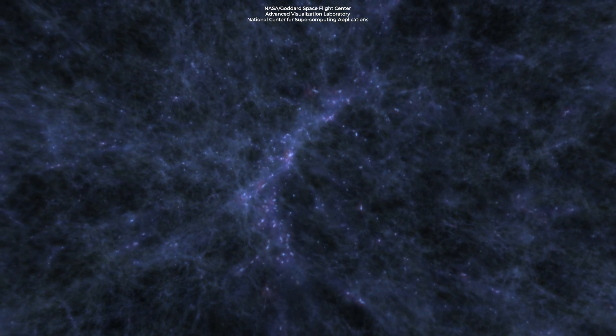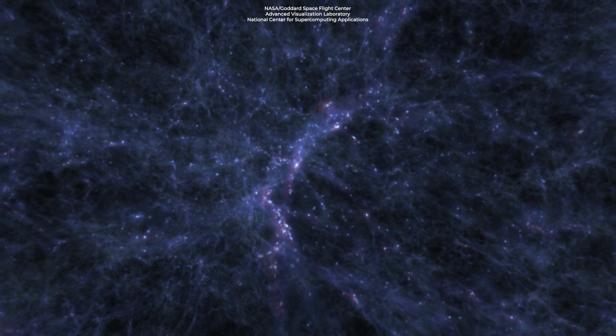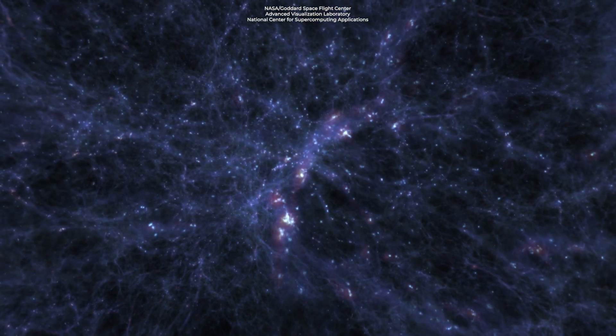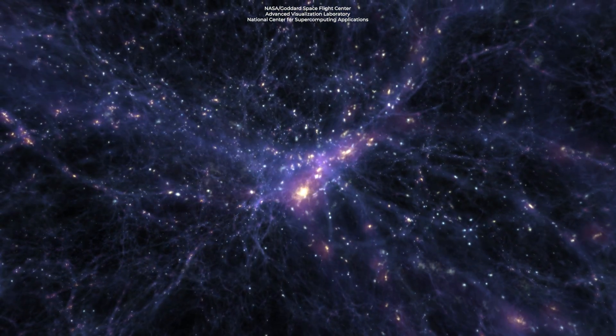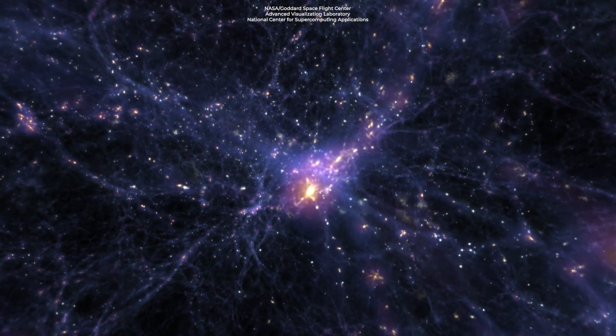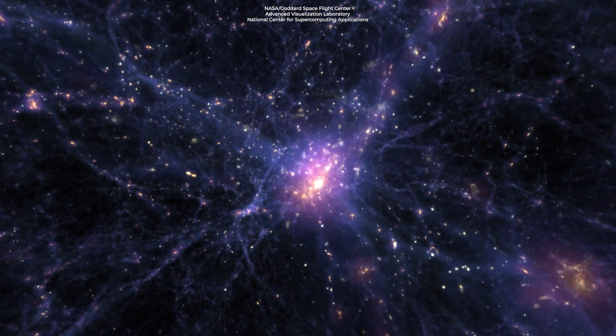As the universe expanded, those differences got bigger and bigger. Thus, the cosmos turned into regions of higher and lower densities of matter in the universe. Those microscopic variations were magnified to the largest scales we see today.